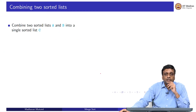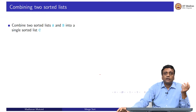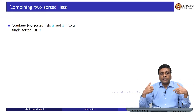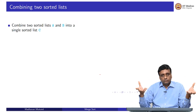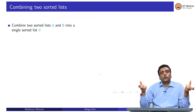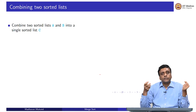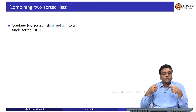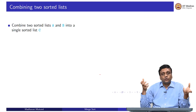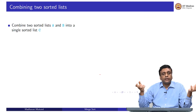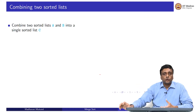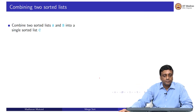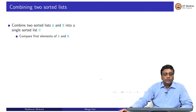Let us focus on the second part: the two TAs have come back and brought me two sorted bundles of answer books. How do I combine them into a single sorted bundle? I take two sorted lists A and B and I want to combine them into a single sorted list C.